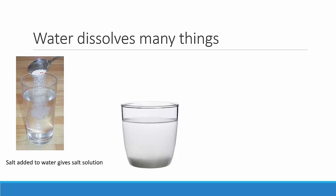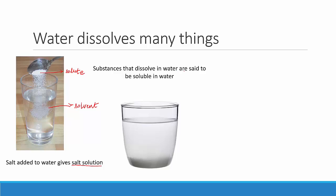So you have salt here — we will call it the solute. And the water it is dissolved in is called the solvent. Salt or sugar that you add is called the solute, and when they dissolve together they form what is called the solution. All the salt added into water completely dissolves to give you a salt solution. Substances that dissolve in water are said to be soluble in water — for example, salt and sugar.